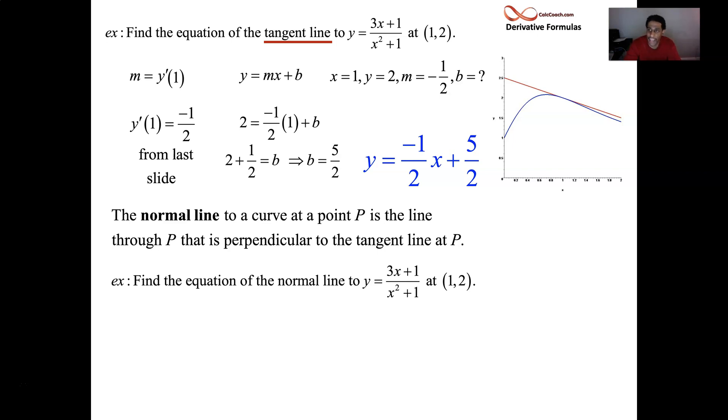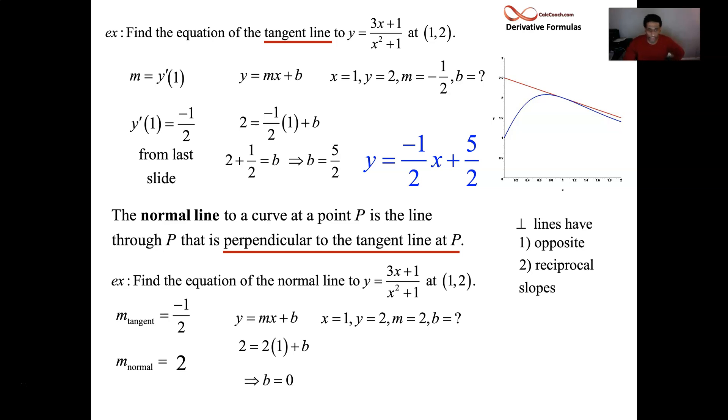We want the normal line equation, which starts with finding its slope. Not by using the definition of the derivative again or doing all that. We know the equation of the line that is orthogonal or perpendicular to it. The slope of it is negative 1 half. What's the relationship between lines that are perpendicular as far as their slopes go? They have to be reciprocal, opposite reciprocals of each other. If this tangent line slope is negative 1 half, then the normal line slope being perpendicular to that is opposite and reciprocal to it. Negative 1 half, opposite and reciprocal to that would be positive 2.